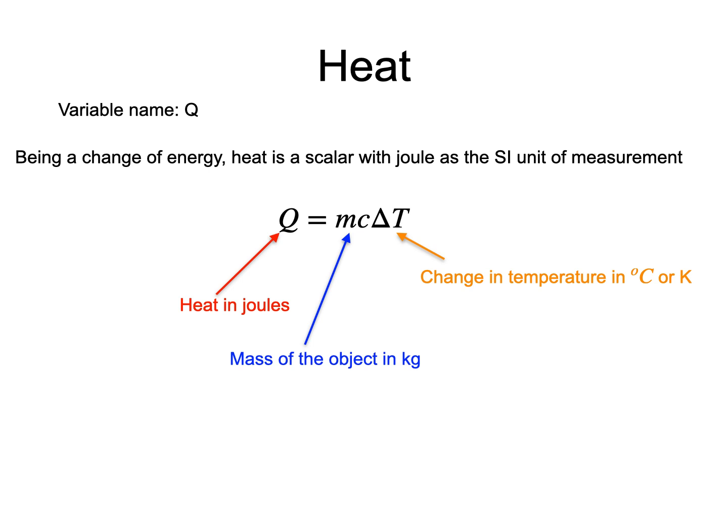The specific heat capacity is the variable labeled small c, which is known as the specific heat capacity of the material that the object is made of. The specific heat capacity is a constant that depends on the material of the object and its state. Its value is found experimentally.